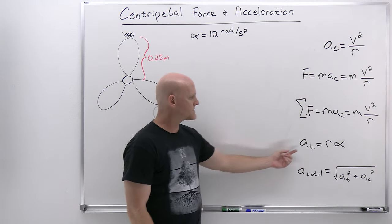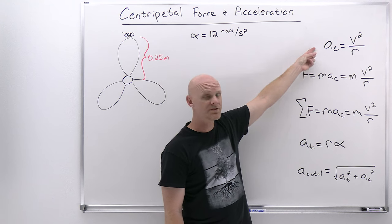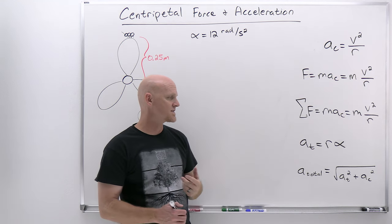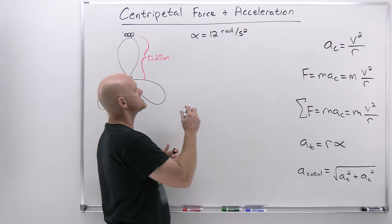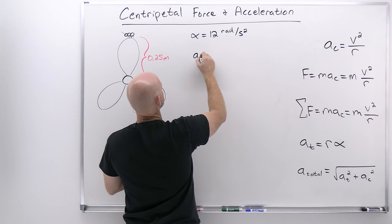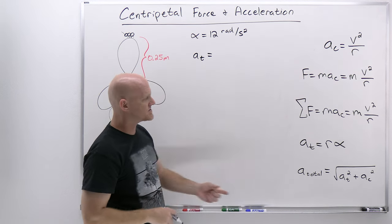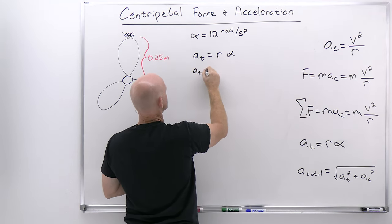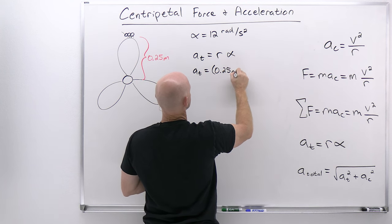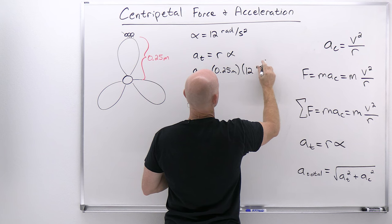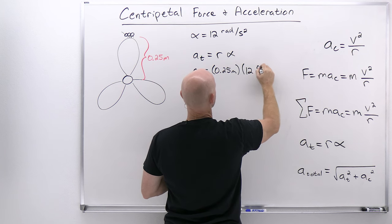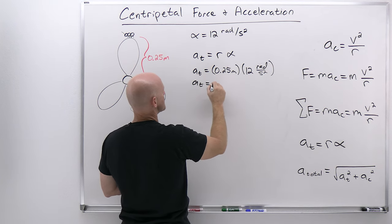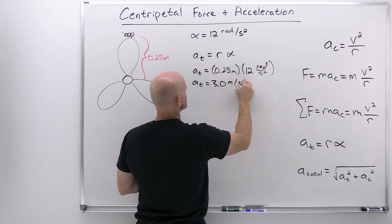We need to solve for tangential acceleration, centripetal acceleration, and then use the Pythagorean theorem to get the total acceleration magnitude. Tangential acceleration equals r times alpha. The radius was 0.25 meters, alpha is 12 radians per second squared. One-fourth of 12 gives a tangential acceleration of 3.0 meters per second squared.